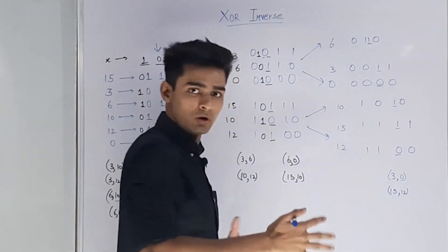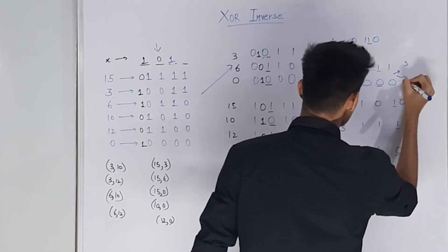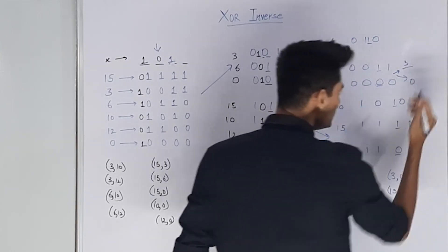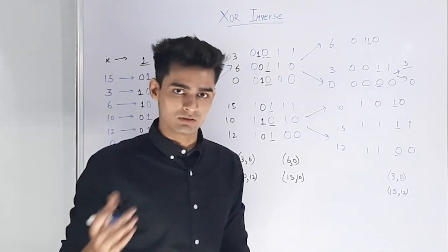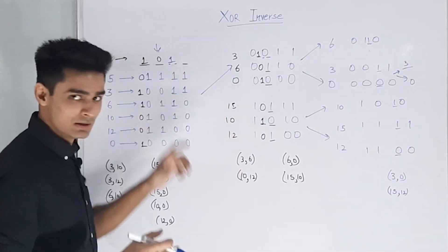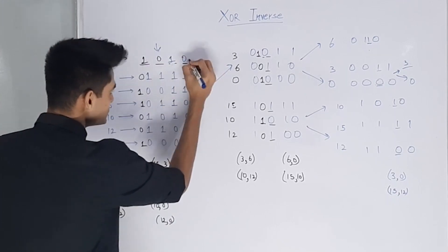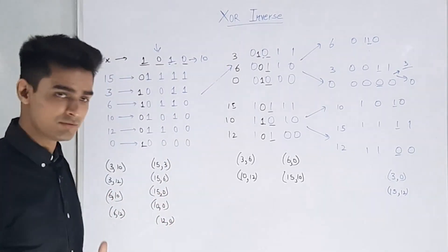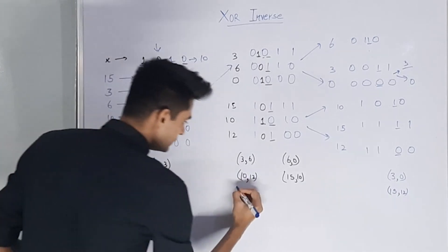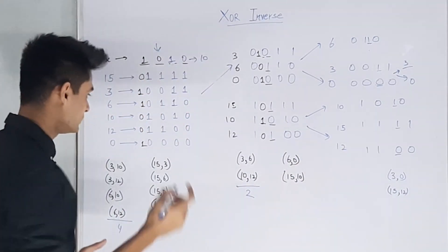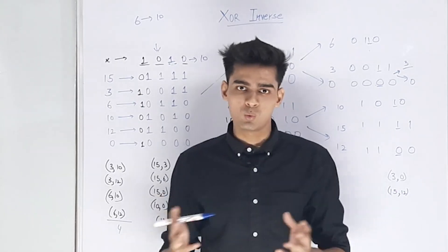The single-value set {6} needs no further splitting. For {3, 0}, we can split but after this all sets will have only one value so no further inversions regardless of bit choice — we take 0 to keep X minimal. The final X is 1010 in binary, which equals 10. The total inversions are: 4 from the first bit, 2 from the second, and 0 from the rest, giving 6 total inversions.